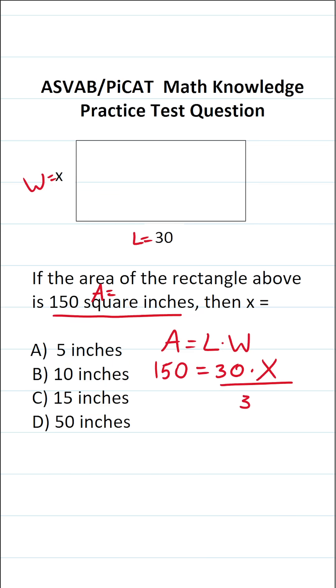And in order to do that, we're going to divide both sides of the equation by 30. In doing so, this crosses out, leaving you with x on this side.